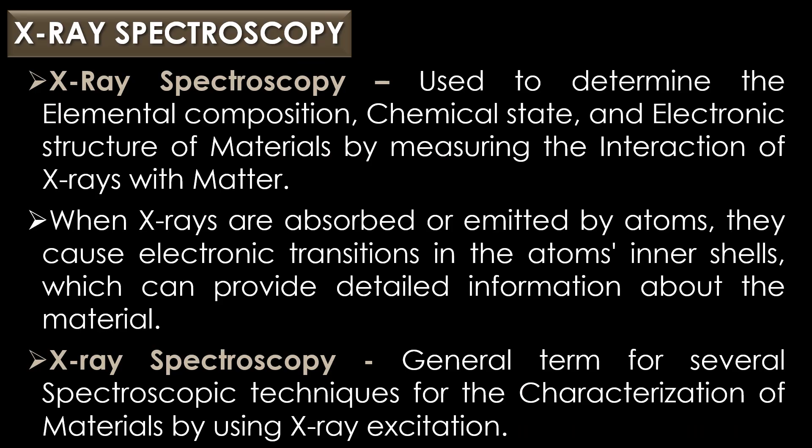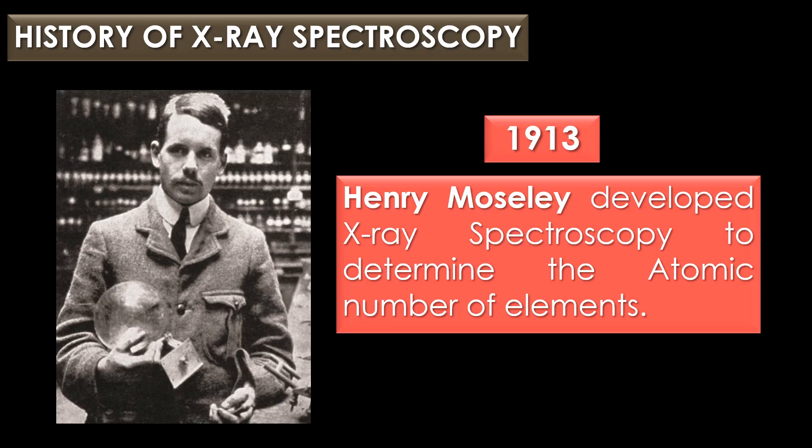X-ray spectroscopy is a technique used to determine the elemental composition, chemical state, and electronic structure of materials by measuring the interaction of X-rays with matter. When X-rays are absorbed or emitted by atoms, they cause electronic transitions in the atoms' inner shell, which can provide detailed information about the material. X-ray spectroscopy is a general term for several spectroscopic techniques for the characterization of materials by using X-ray excitation.